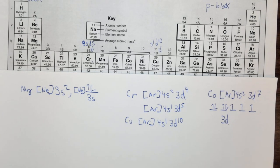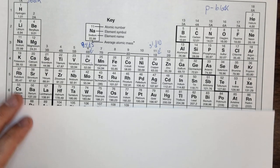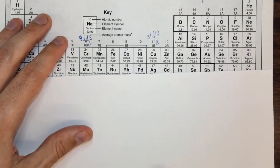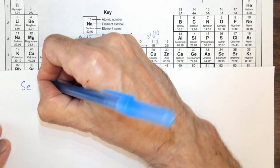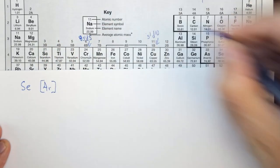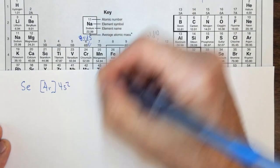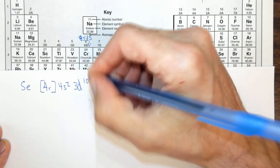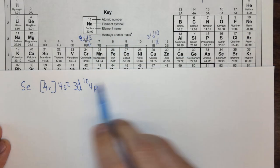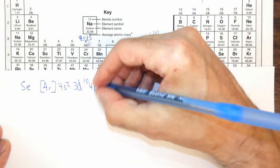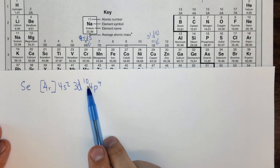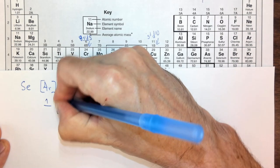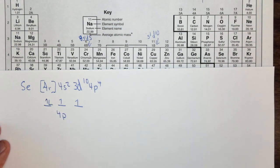Let's do selenium (Se, element 34). We put argon in brackets, then 4s² 3d¹⁰ 4p⁴ — notice the p block returns to period 4. To check: the 4p has three orbitals and four electrons, so there are unpaired electrons. Selenium is paramagnetic.